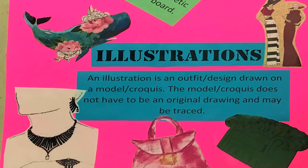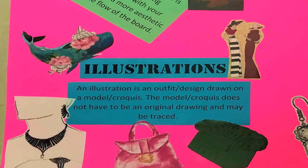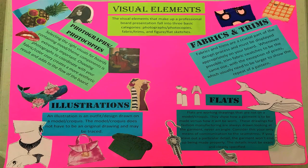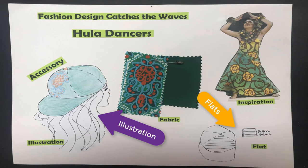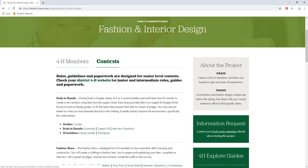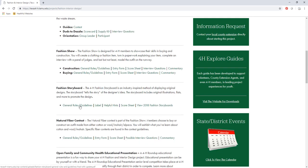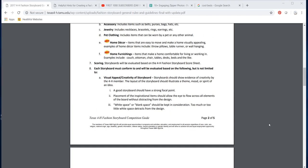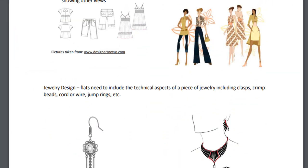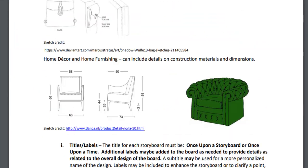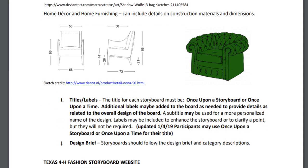The only exceptions are Home Decor and Home Furnishings — if you need help with that, comment below and I can make a video just on that. Also, the Texas 4-H guidelines and rules packet shows examples in every category except pet, but pet is the same thing: the illustration would be your garment on the pet, and the flat would just be the item itself.